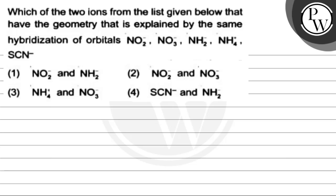Hello, let's read this question. The question says: which of the two ions from the list given below have the geometry that is explained by the same hybridization of orbitals? The options are NO₂⁻, NO₃⁻, NH₂⁻, NH₄⁺, and SCN⁻. So this question asks which two ionic species share the same hybridization.